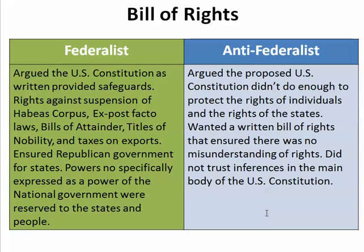They wanted an expressed Bill of Rights in writing. The Federalists argued that the U.S. Constitution had already provided safeguards — rights against suspension of habeas corpus, meaning in times of peace the government can't throw you in jail without a court appearance, a chance to bond out, and an attorney. Ex post facto laws: you couldn't make a law after the fact and then go back and charge someone for breaking it before it was even a law. And bills of attainder are laws that punish you without a jury trial. You have a right to a jury trial.